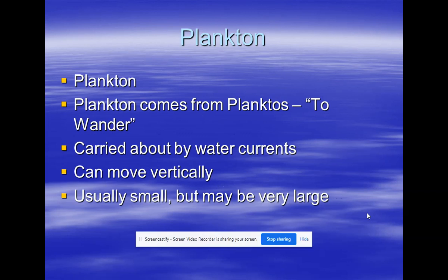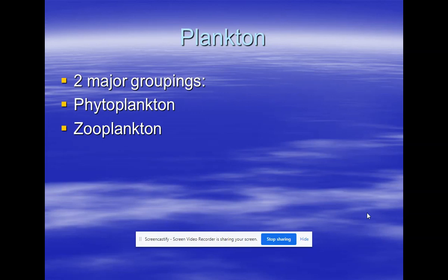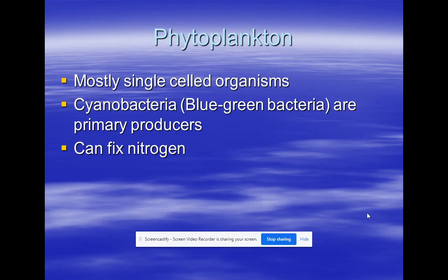Plankton comes from the Greek word meaning to wander — they're the drifters, carried by water currents. They can move up and down but can't fight the current. They're usually small but can be large — the lion's mane jellyfish, Cyanea capillata, can get to 13 feet in diameter up north. Most plankton are tiny because small size helps them stay up in the water column. Phytoplankton are plant-like plankton; zooplankton are animal-like plankton. Those are the two major groupings, with subcategories we'll get into as we go.